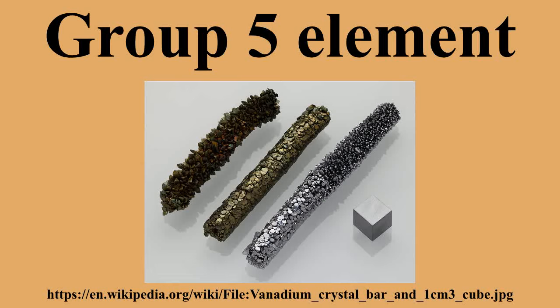Vanadium was discovered by Andrés Manuel del Río, a Spanish-born Mexican mineralogist, in 1801 in the mineral vanadinite. After other chemists rejected his discovery of erythronium, he retracted his claim. Niobium was discovered by the English chemist Charles Hatchett in 1801. Tantalum was first discovered in 1802 by Anders Gustav Ekeberg; however, it was thought to be identical to niobium until 1846, when Heinrich Rose proved that the two elements were different. Pure tantalum was not produced until 1903.